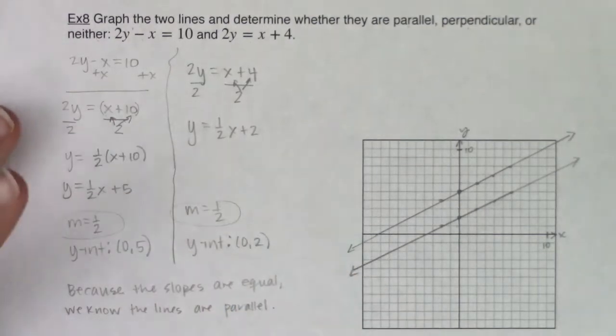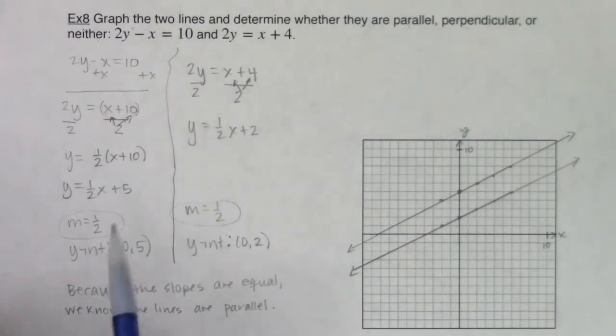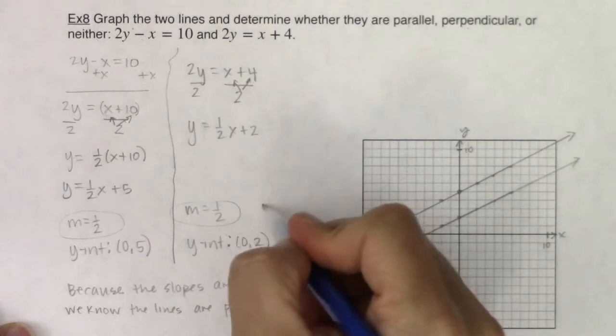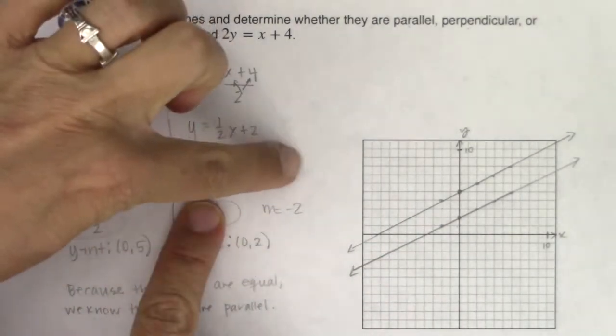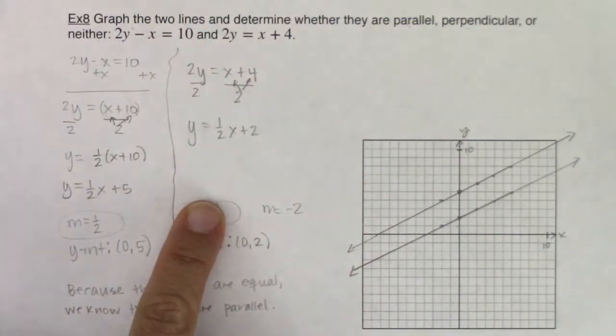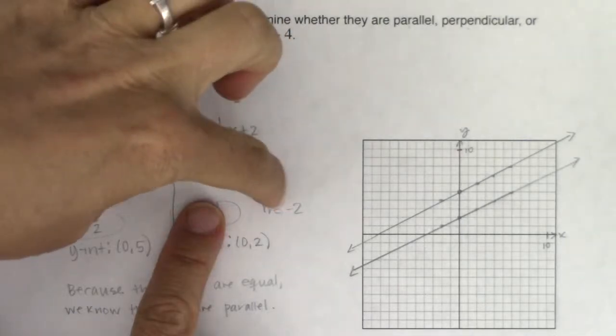All right. So this first example we were looking at, we saw parallel lines. Great. And let's just say, for example, if this slope was 1 half and this was negative 2. So let me just write this here. If the slope in this problem, even though it was 1 half, but let's just say, for example, if it was negative 2, that is the opposite reciprocal to 1 half. If that was the case, then the slopes would have been perpendicular.